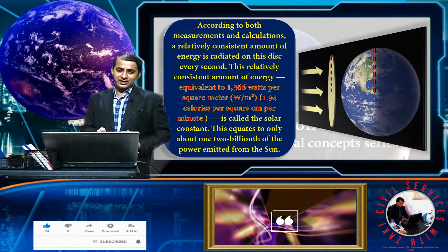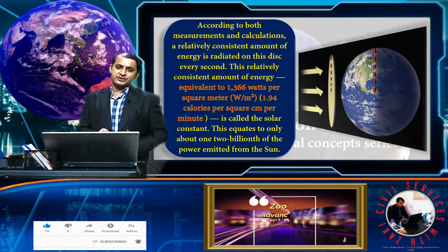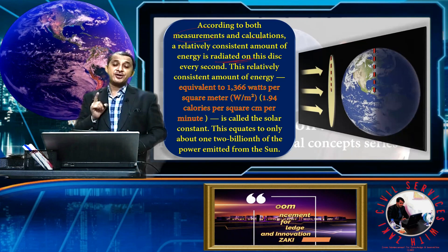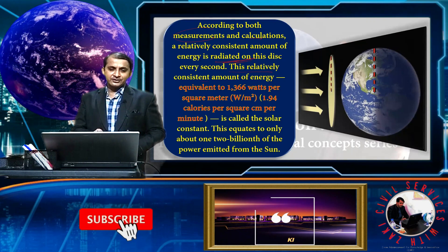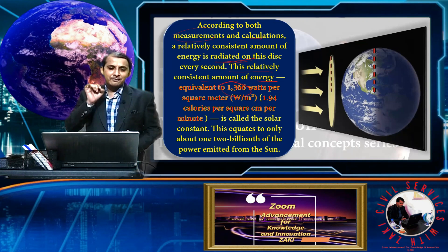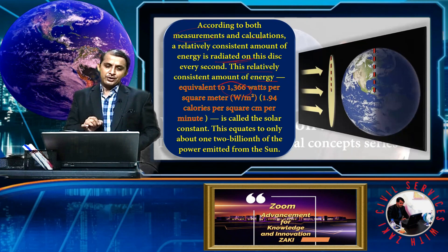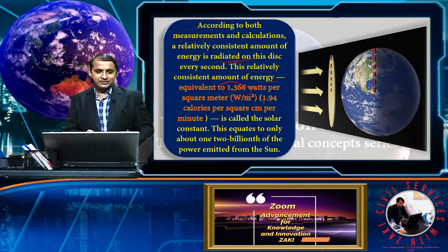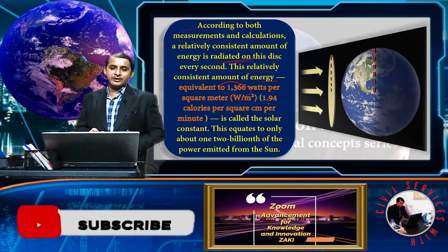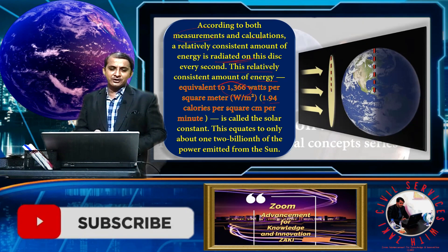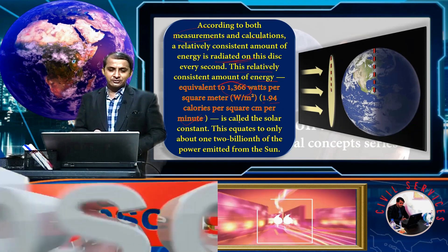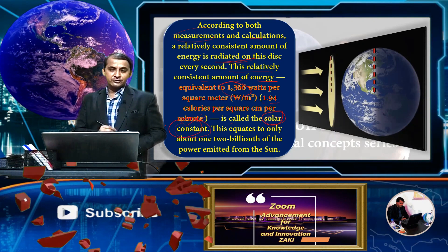According to both measurement and calculation, a relatively consistent amount of energy is radiated on this disc every second. This amount of energy is equivalent to 1366 watts per square meter, or about 1.94 calories per square centimeter per minute. This is called the solar constant.